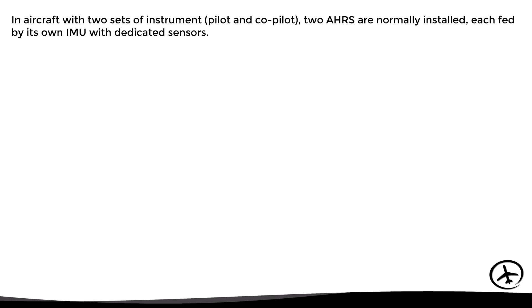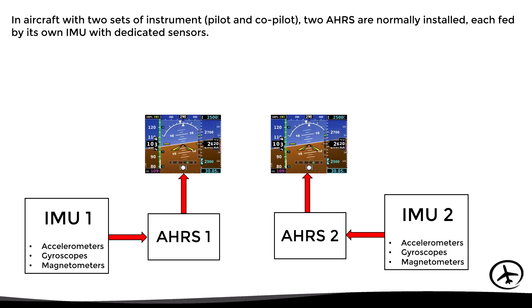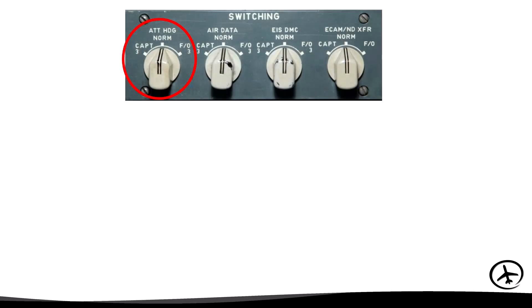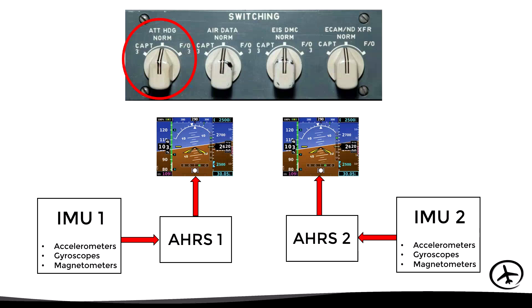In an aircraft with two sets of instruments, two AHRS are normally installed, each fed by its own IMU with dedicated sensors. This means there is one AHRS for the captain's instruments and another for the first officer's instruments, plus standby instruments driven by mechanical gyros. As with air data computers, when more than one AHRS unit is installed, although each is independent, they are interconnected so that the information from each can be compared to detect failures or inaccuracies. There is also the possibility to select which AHRS feeds a certain group of instruments — for example, if AHRS number two fails, the crew can select AHRS number one to also feed the first officer's instruments.